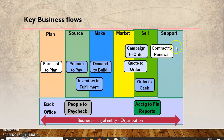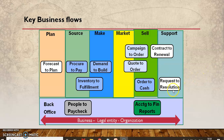Contract to renewal is mostly on the project side — if you have a long-running contract that needs to be renewed. Request to resolution is where, if there are warranty or support cases and you have challenges, a product needs to be serviced or a replacement provided. For example, if your mobile connection is not working, you call the call center, describe your problem, and they give you a support ticket — that is where request to resolution happens.